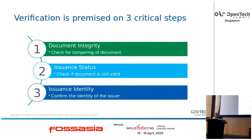The verification tech at the core of Open Attestation is premised on three critical steps: verifying that the document has not been tampered with and has been issued by the issuer; verifying that the document has not been revoked; and confirming the identity of the issuer.